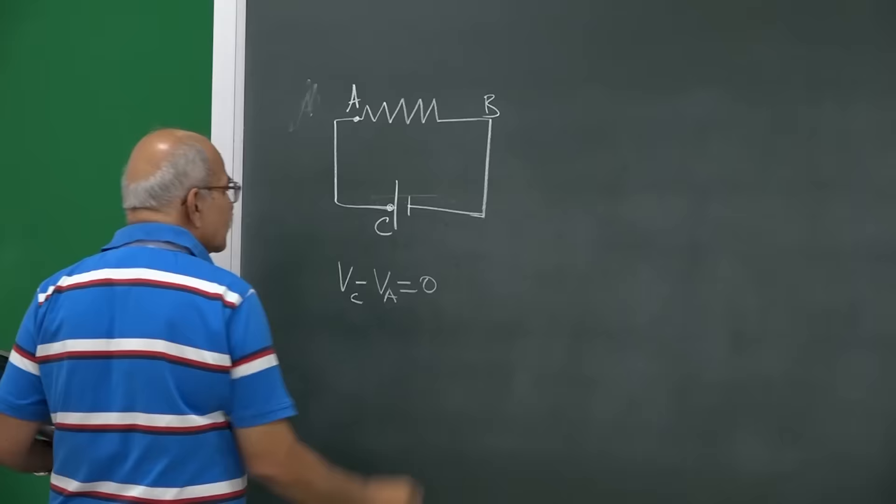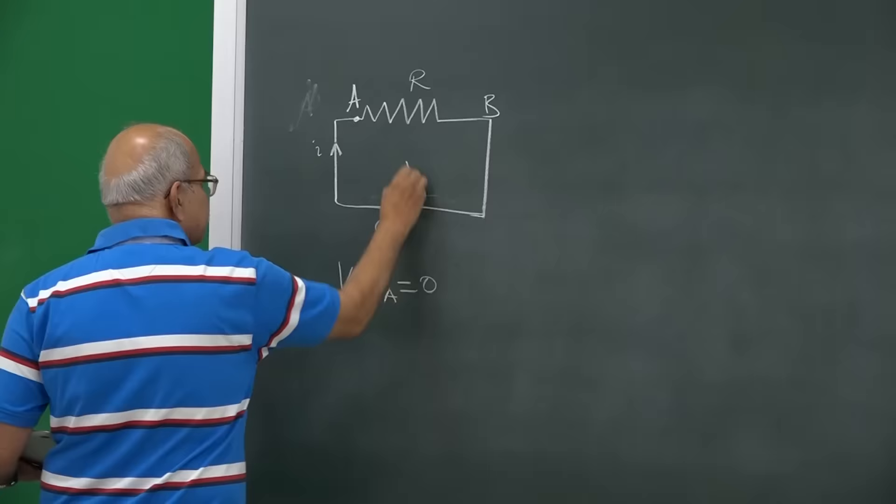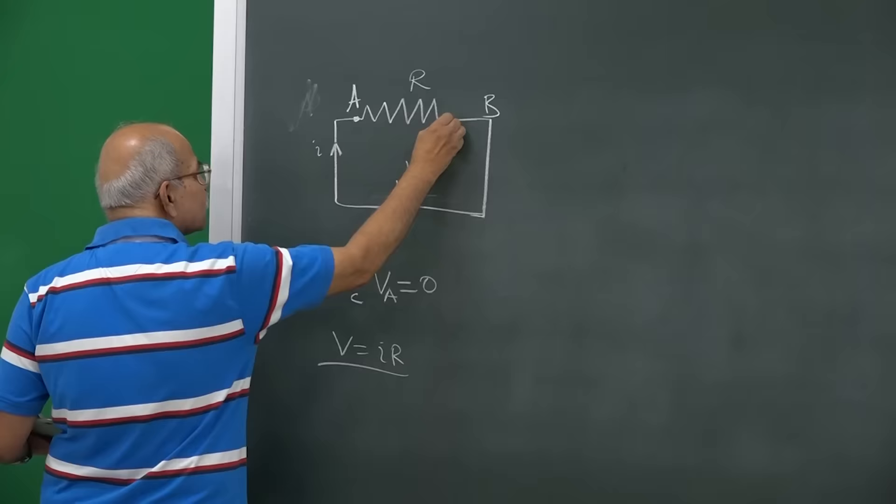We always say that the current is I and then resistance is R and this is V, then V equals I times R and this IR is the potential difference here to here. The potential difference here is taken as 0.